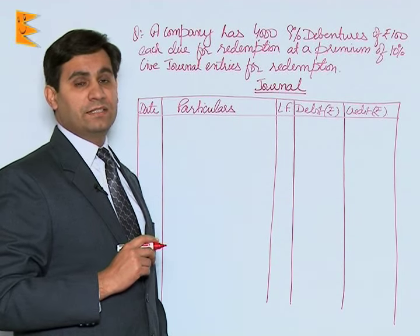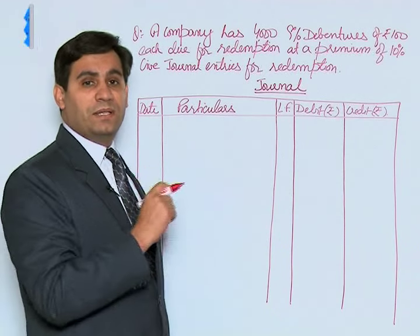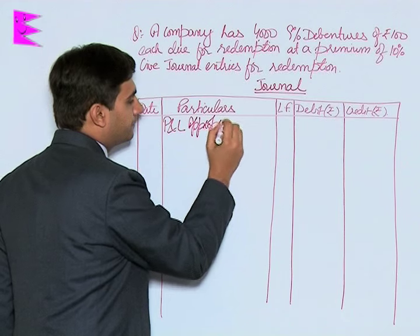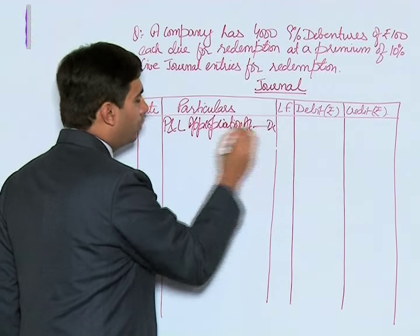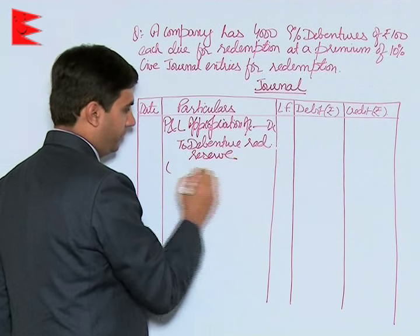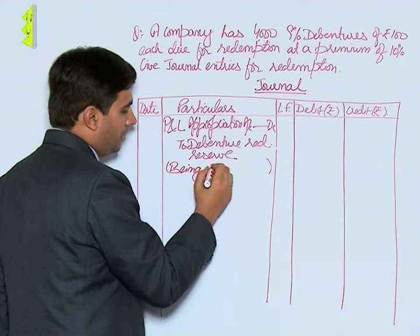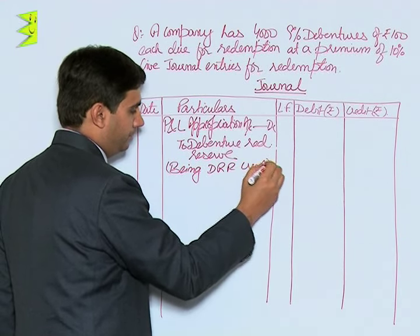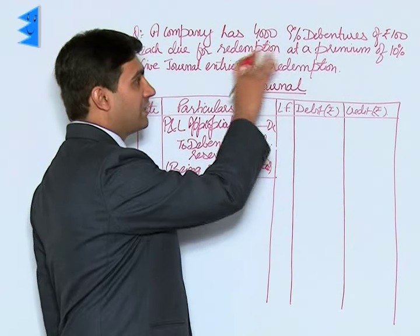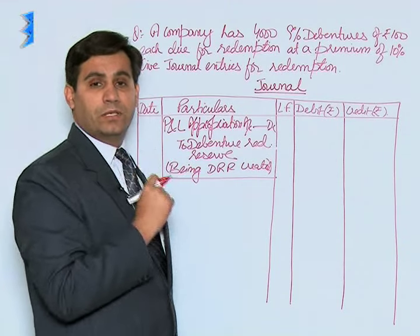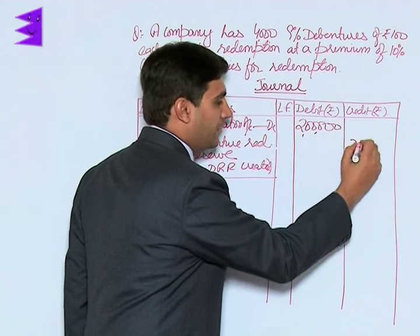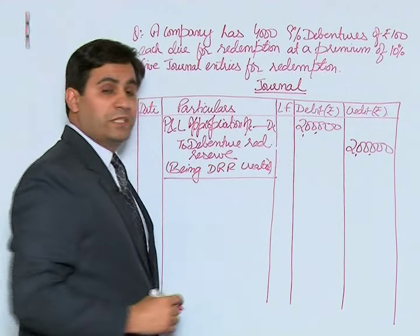As per the provisions of Section 117C, we must create a Debenture Redemption Reserve (DRR) before commencing with the redemption. The entry for that would be: Profit and Loss Appropriation Account debited to Debenture Redemption Reserve. As per the guidelines, DRR must be equal to 50% of the face value of debentures to be redeemed. In this case, four lakh into fifty percent means DRR should be created for two lakh rupees.